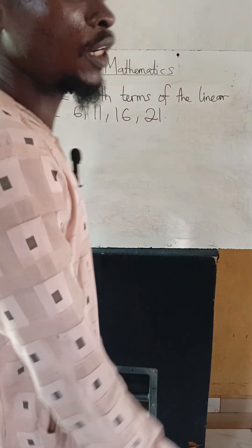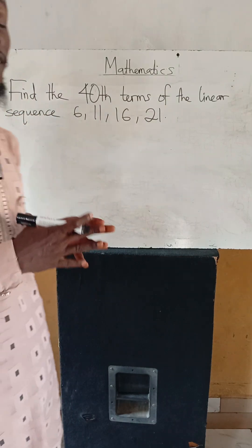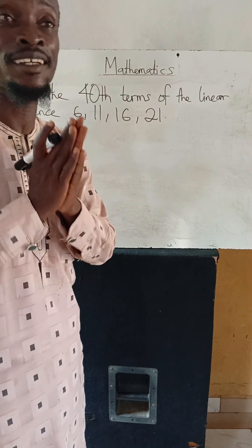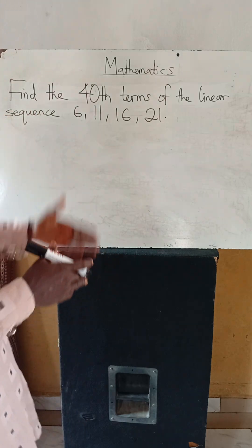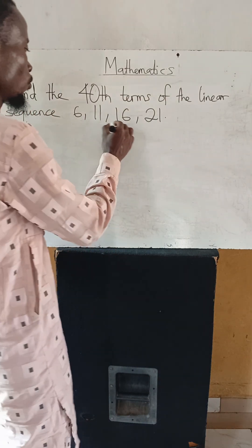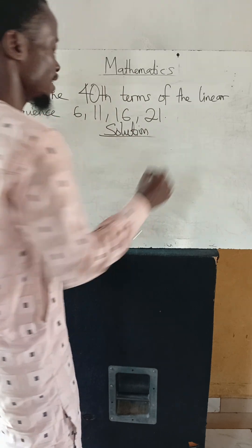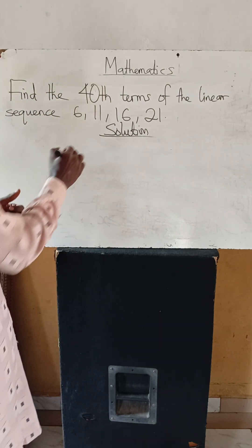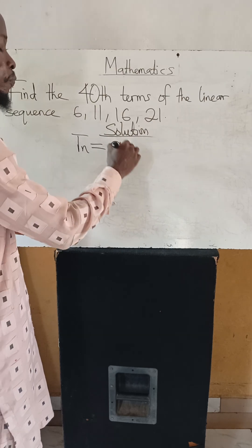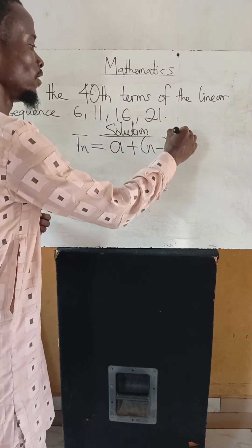Welcome to my channel. We are working under sequences and series, specifically linear sequences with arithmetic progression. We have to find the 40th term of the sequence. We know that the nth term of an AP (arithmetic progression) is T(n) = a + (n-1)d.